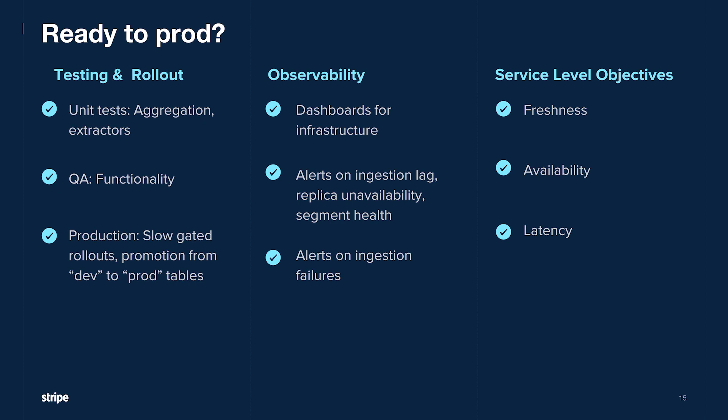Now you're in production and querying the table — either using the platform APIs or directly querying the Pinot brokers. You might wonder: is my table okay? How are my queries performing? We have comprehensive observability to answer those questions. We have dashboards monitoring all system metrics for Pinot servers, Zookeeper, and brokers. We alert on ingestion lags, replica unavailability, segment health, query latency, and any ingestion failures. As a platform team, we provide freshness, availability, and latency guarantees for all our users.